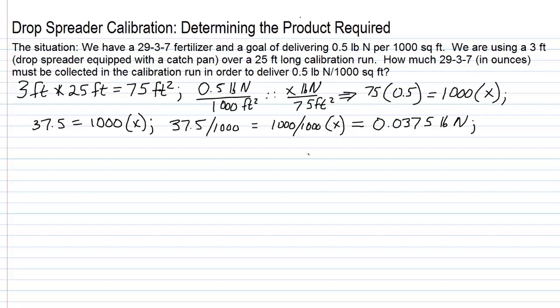Now, we're going to work with the product we have, and the product is a 29-3-7, and we're going to use that 29% nitrogen by weight to make the next calculation. Because when we have pounds of nutrient, to convert pounds of nutrient to pounds of product, we divide by the nitrogen analysis.